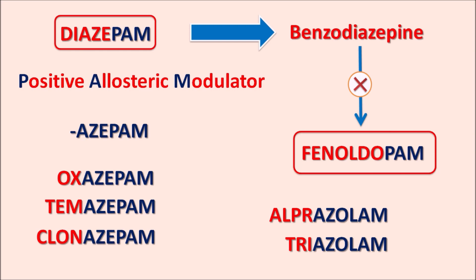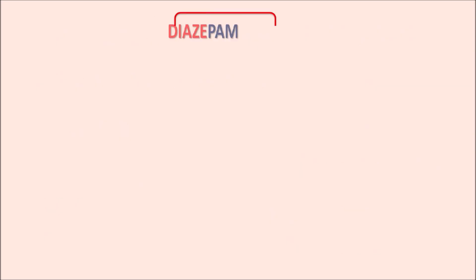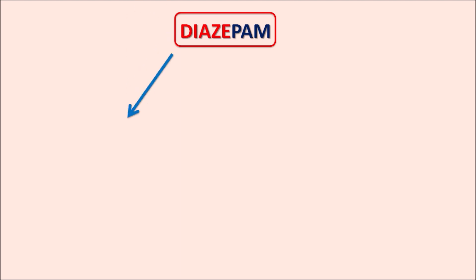Today in this video we are going to discuss diazepam — how this drug acts, what the clinical indications, precautions, drug interactions, contraindications, and side effects are. The first clinical use of diazepam is mainly to treat anxiety disorders, which are given for short-term use. Anxiety disorders are classified into different categories; among them, generalized anxiety disorder is one, occurring without any proper reason.